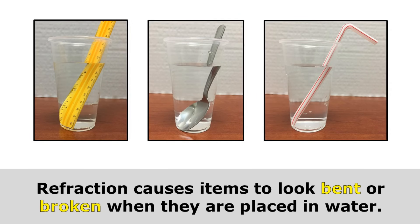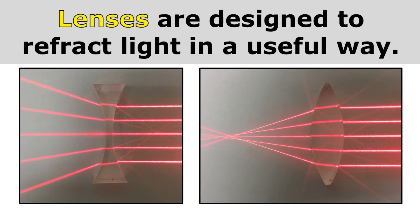Refraction causes items to look bent or broken when they're placed in water. You can see here that in each of these examples, the item looks bent or broken. That's because as the light travels from the water into the air, it bends, and that distorts the image you see. Lenses are designed to refract light in a useful way — the shape of the lens determines how the light refracts through it. Lenses are for refraction.